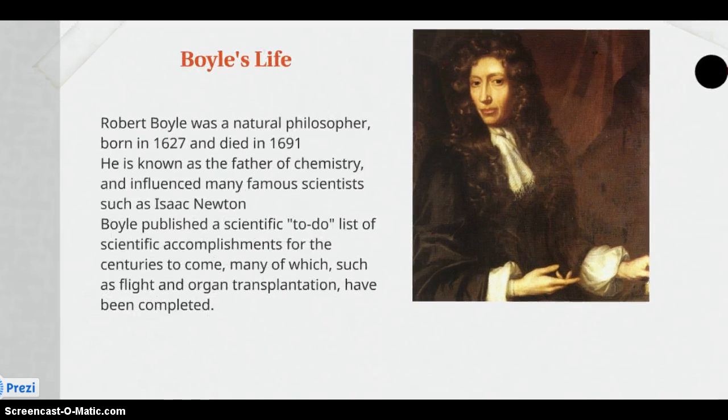Robert Boyle was a natural philosopher who was born in 1627 and died in 1691. He was known as the father of chemistry and influenced many famous scientists such as Isaac Newton. He published a scientific to-do list of scientific accomplishments for the centuries to come, many of which, such as flight and organ transplantation, have been completed.